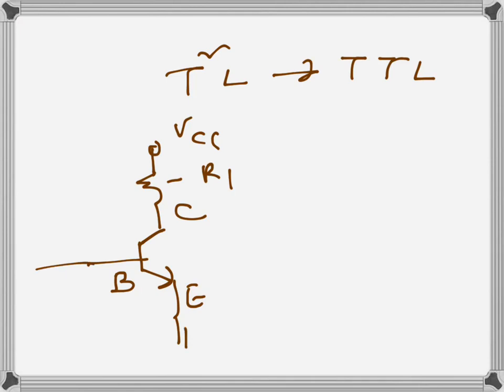When the base-emitter junction is forward biased, it can be driven into saturation. So if a positive voltage is applied at the base, the transistor can go into saturation, and as a result VCE becomes approximately zero, close to zero.